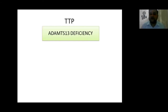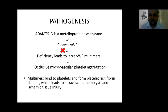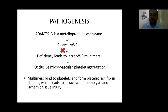TTP is mostly because of ADAMTS-13 deficiency. This can be either hereditary — because of recessive mutations, homozygous or compound heterozygous in the ADAMTS-13 gene — or acquired, because of autoantibodies against ADAMTS-13. ADAMTS-13 is a nanometalloproteinase enzyme with thrombospondin motif-13 that cleaves von Willebrand factor. Deficiency of ADAMTS-13 leads to large von Willebrand factor multimers, which bind to platelets and form platelet-rich fibrin strands, causing intravascular hemolysis from shearing stress on RBCs, and microthrombi causing ischemia, tissue injury, and end organ damage.